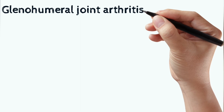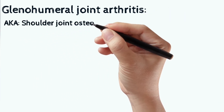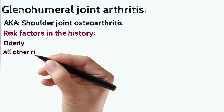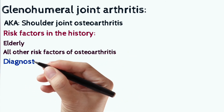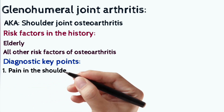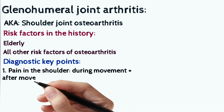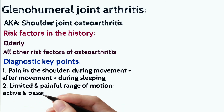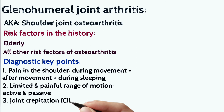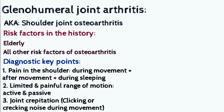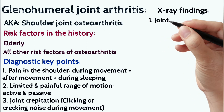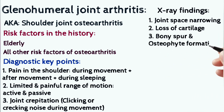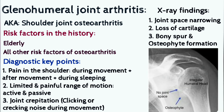Glenohumeral joint arthritis, also known as shoulder joint osteoarthritis. Risk factors include elderly age and all other risk factors of osteoarthritis. Diagnostic key points: pain in the shoulder during movement, after movement, and even during sleep, with limited and painful range of motion (both active and passive). Joint crepitation — clicking or cracking noise during movement. On x-ray: joint space narrowing, loss of cartilage, and bony spurs or osteophyte formation.